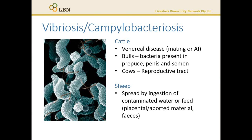In cattle, Vibriosis is a venereal disease. The bacteria are found in the bull in semen, the penis and the prepuce, and in cows it's found throughout the entire reproductive tract. The bacteria is spread by sexual activity or through artificial insemination if hygiene practices are poor.